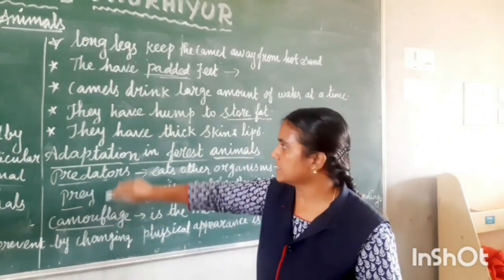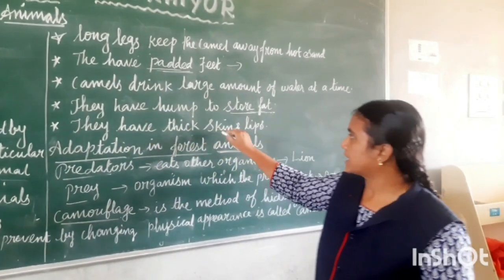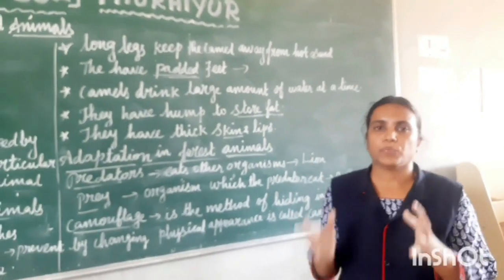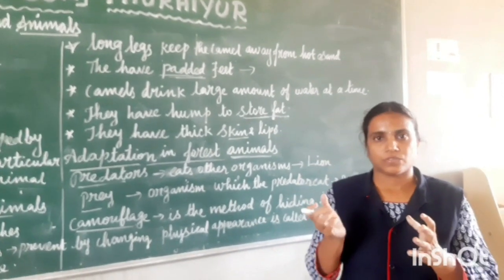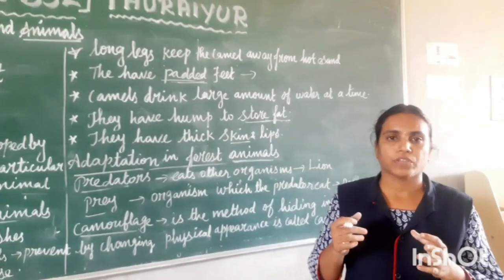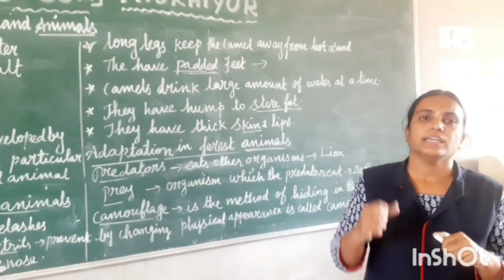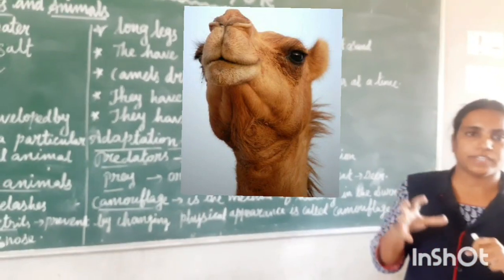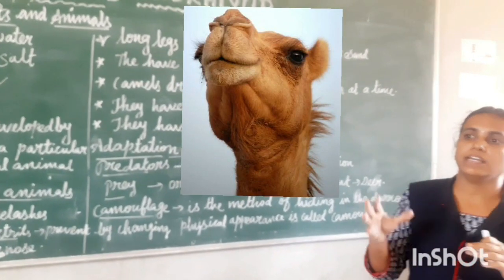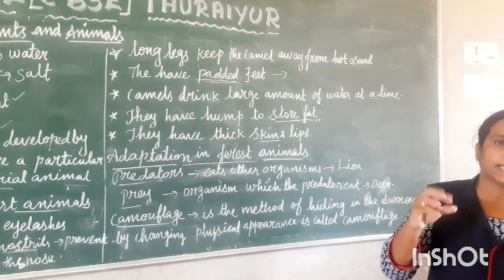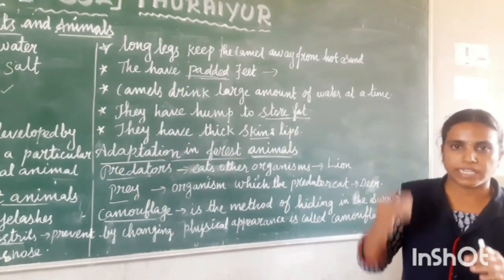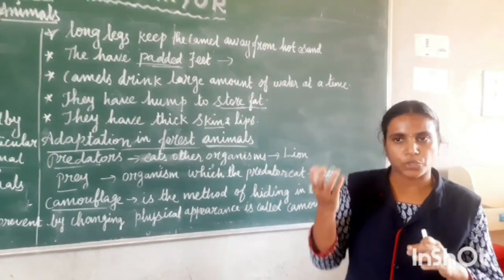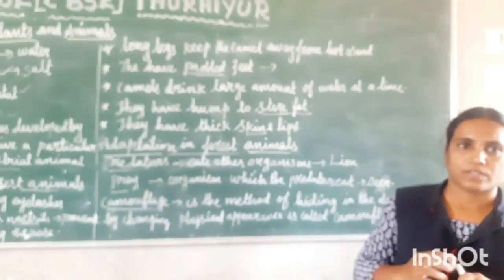The next adaptation is thick skin and thick lips. The thick skin protects the camel from the heat. They have thick lips because in the desert, thorny plants and cactus grow. If they eat thorny plants, it could cause injury. The thick lips help prevent that injury.